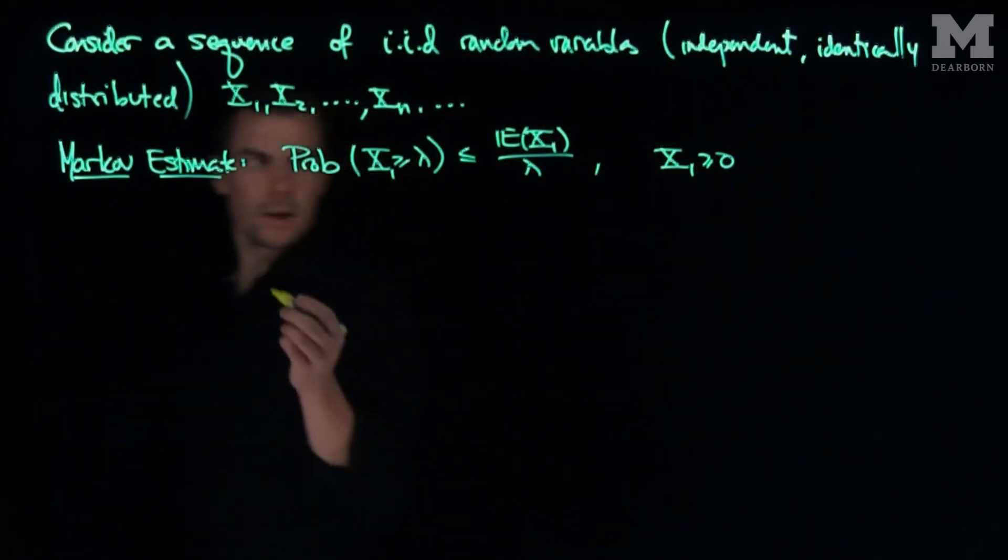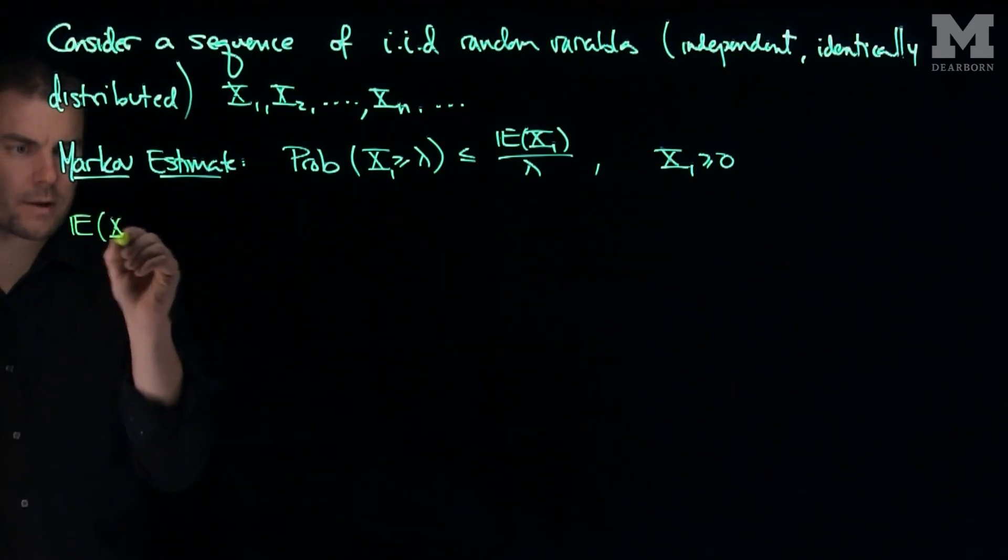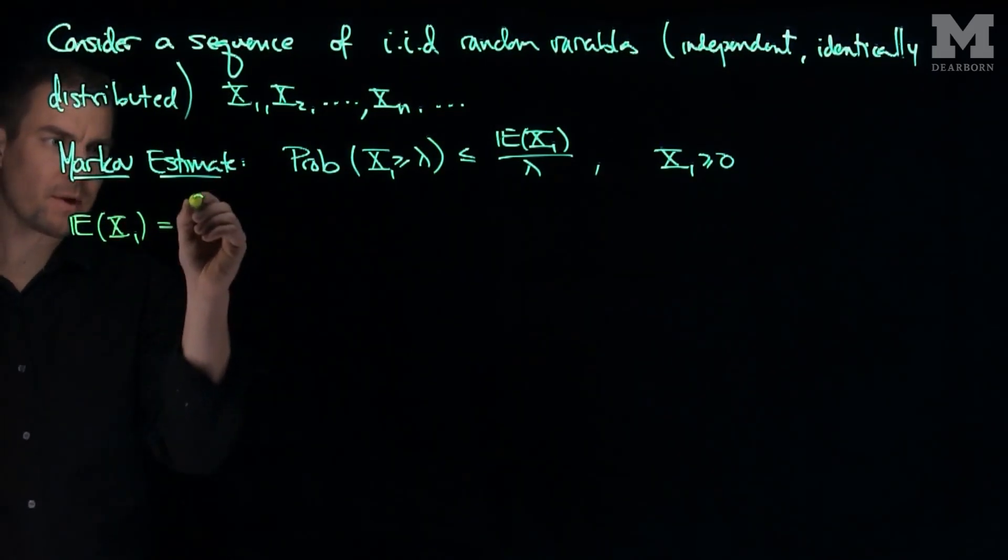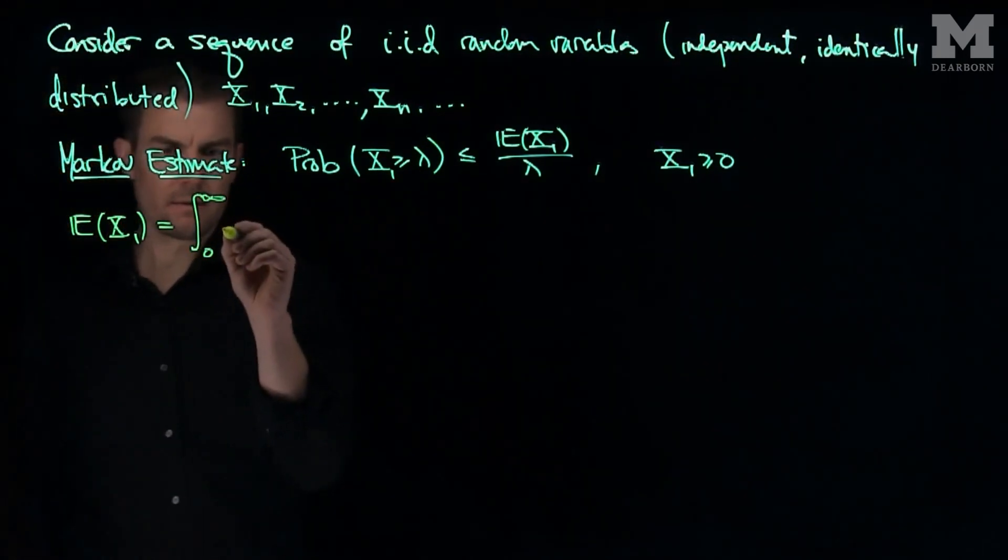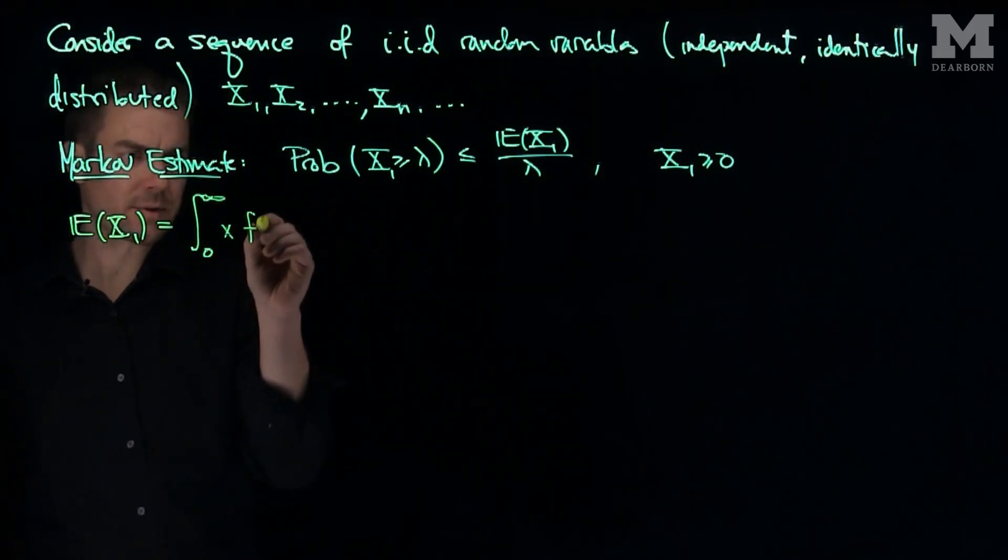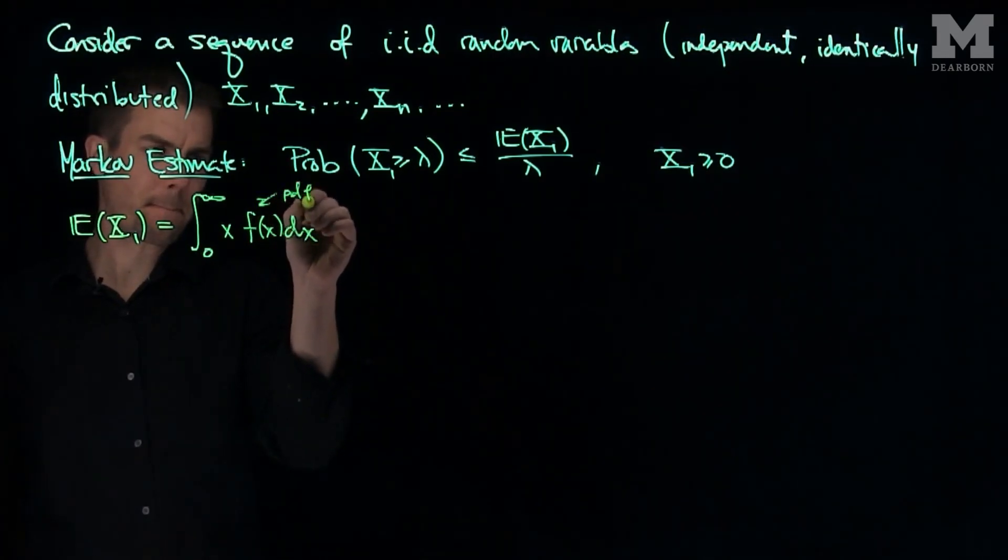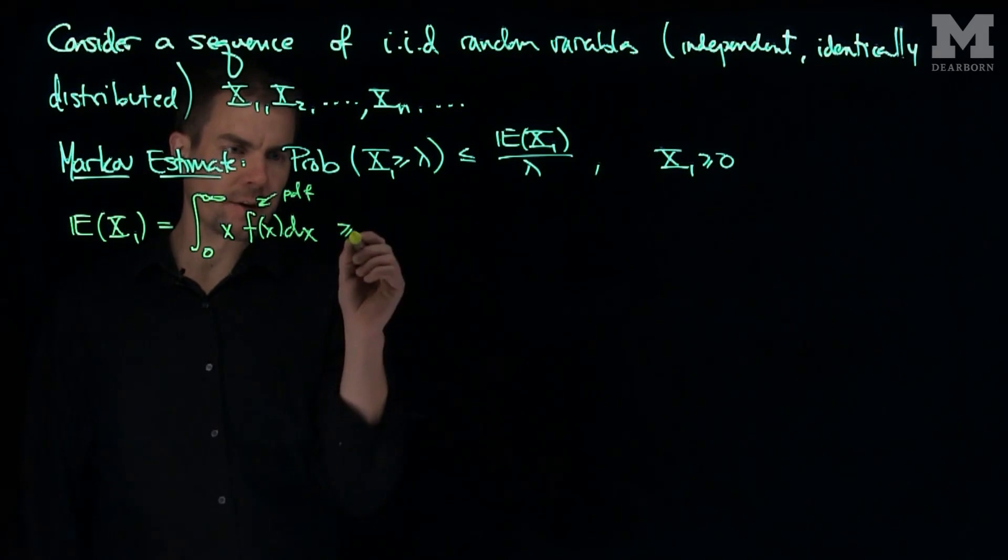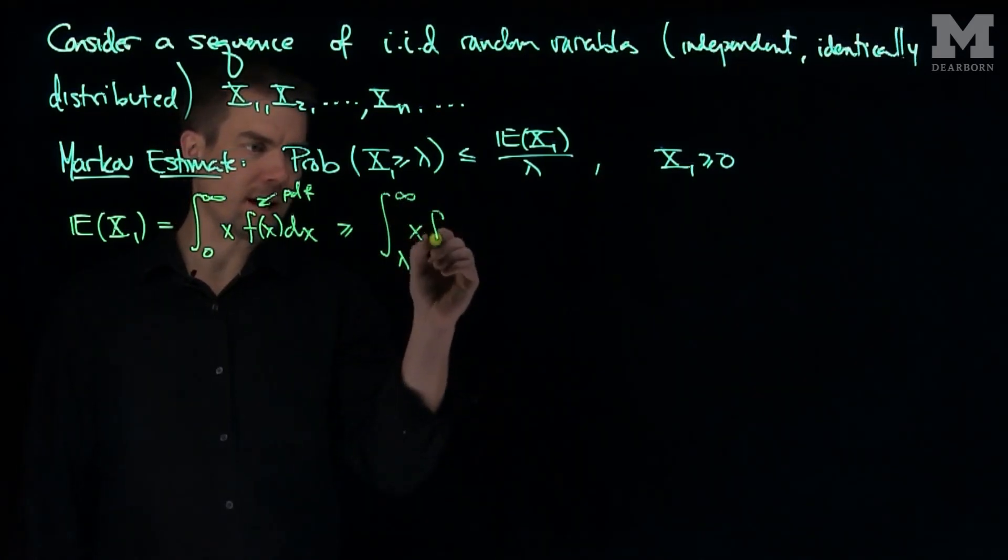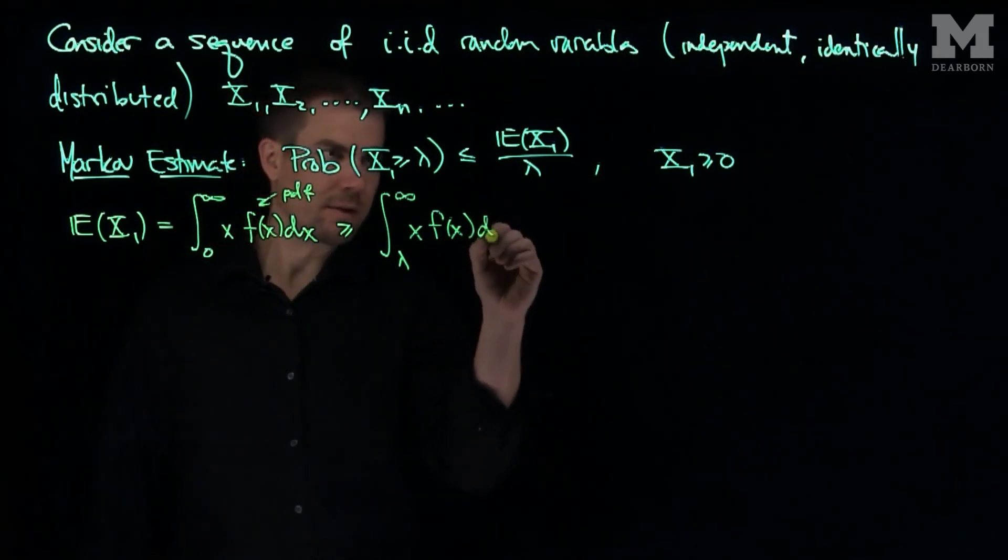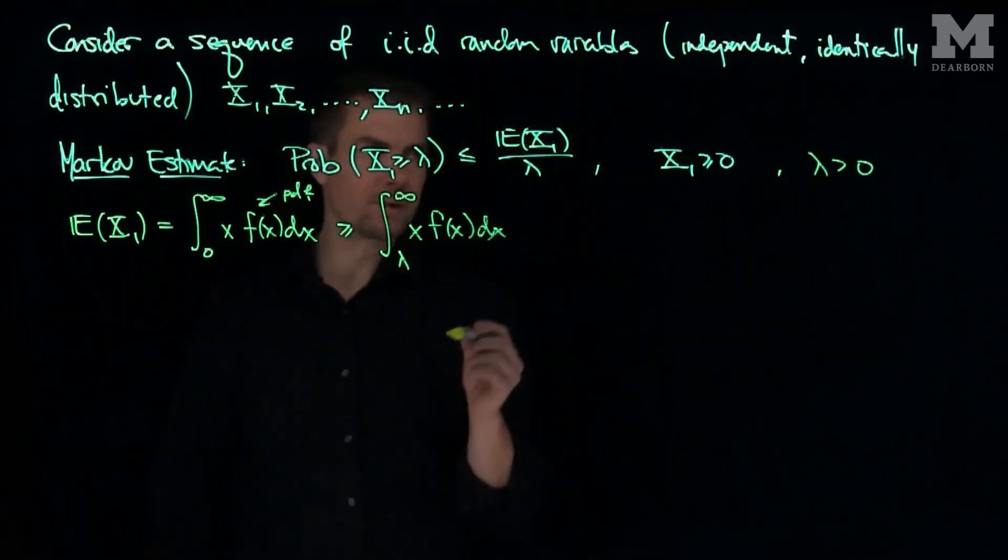Well, what we can do is look at the expected value of X1, and that will be the integral from 0 to infinity of X times f dx, where that's the PDF. This is bigger than or equal to the integral from lambda to infinity of X times f dx, if lambda is greater than 0. In other words, we have the entire real line.